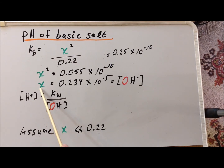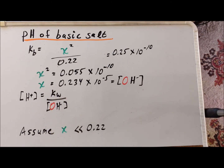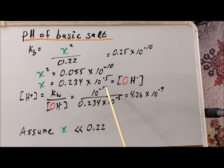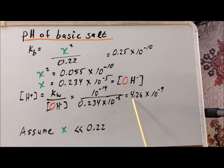We remind ourselves that the variable X was equal to the concentration of hydroxide ion. Since we want to find the pH, we want to first find the concentration of protons H+, and recall that we can solve for this concentration — it's equal to Kw divided by the concentration of hydroxide ions. Kw at 25 degrees centigrade is 10 to the minus 14. Our solved concentration of hydroxide ion is 0.234 times 10 to the minus 5, so our proton concentration is equal to 4.26 times 10 to the minus 9.